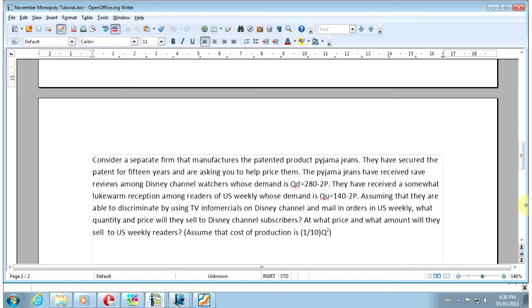Assuming that they are able to discriminate by using TV infomercials on Disney Channel and mail-in orders in Us Weekly, what quantity and price will they sell to Disney Channel subscribers? And what quantity and price will they sell to Us Weekly readers? And we're assuming that their cost of production is 1/10 Q squared.